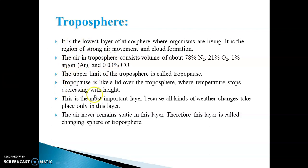The Tropopause is like a lid over the Troposphere where temperature stops decreasing with height. That means if the height keeps increasing, its temperature decreases. This is the important layer because weather changes take place only in this layer. The air never remains static in this layer, which is why it is called the changing sphere or Troposphere.